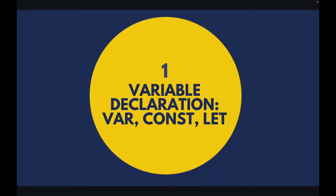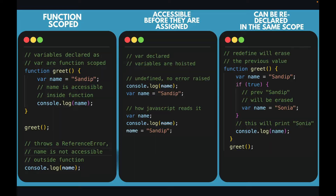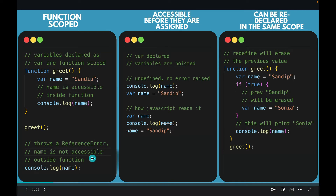You can define variables in JavaScript using three different ways: var, const, and let. Variables declared as var are function scoped. Like in this create function, I have declared a name variable which is accessible inside this function. But if I try to access that same variable outside the function, it's going to throw a reference error.